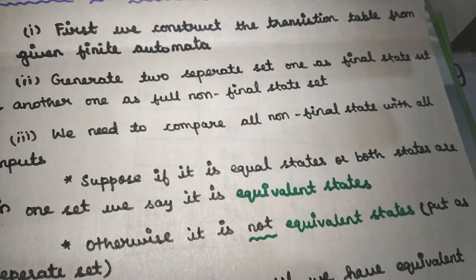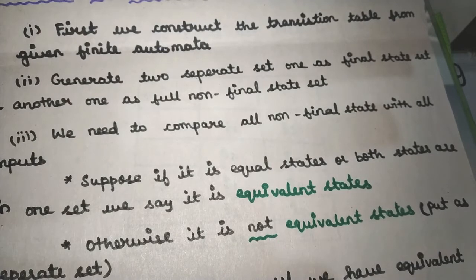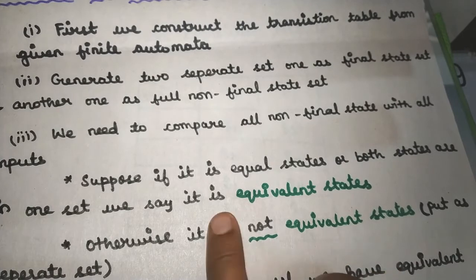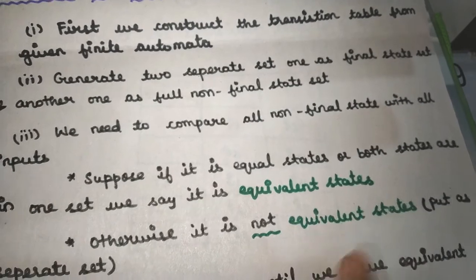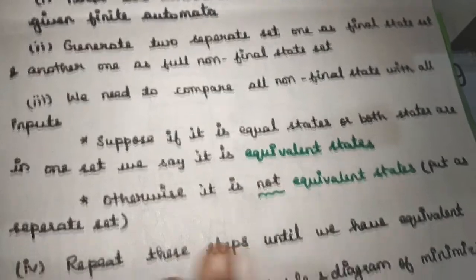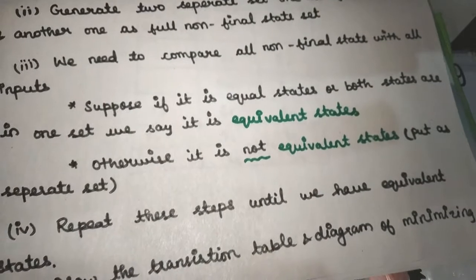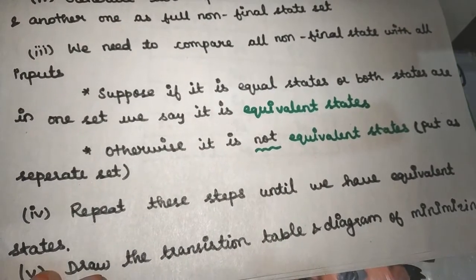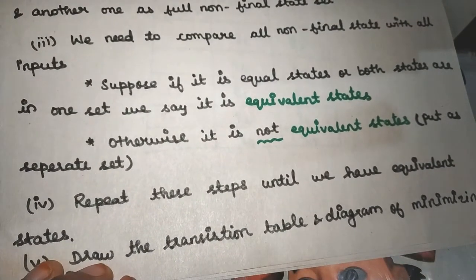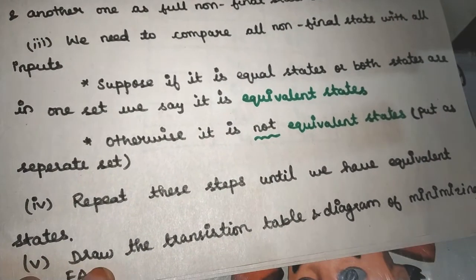If both states are equal and you have one set of states, they are in the same place. If you have two states that are not equivalent, we repeat this procedure until we have equivalent states.